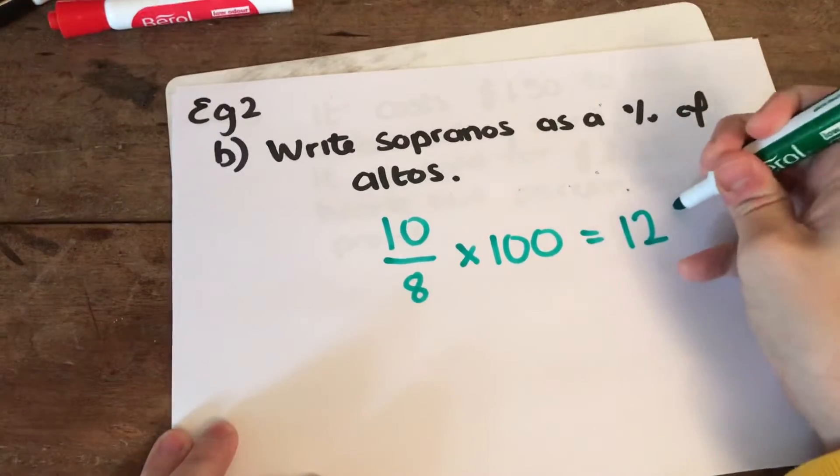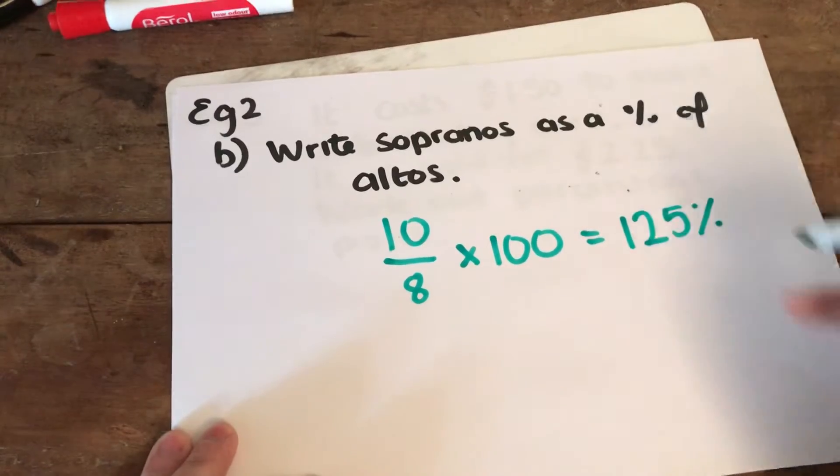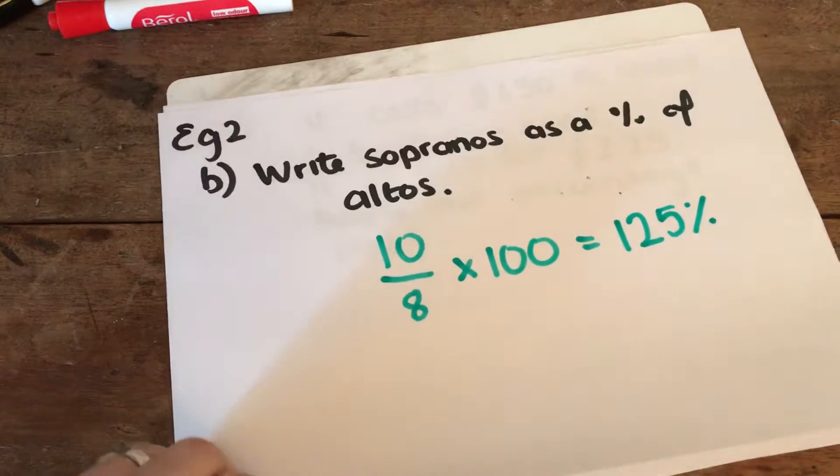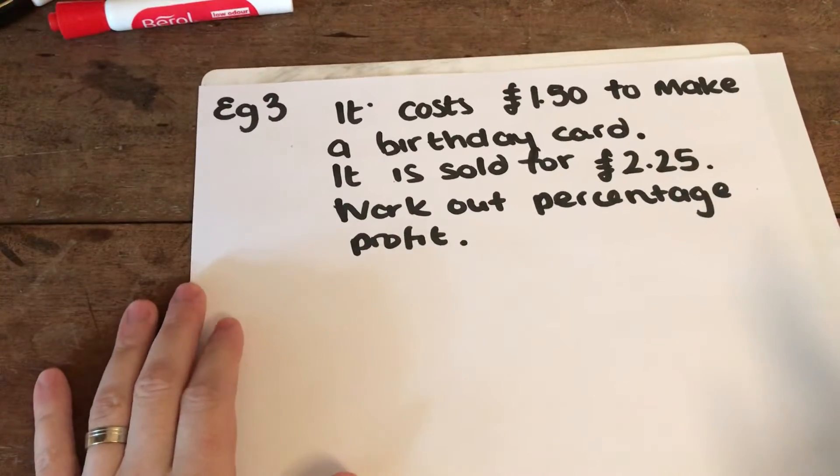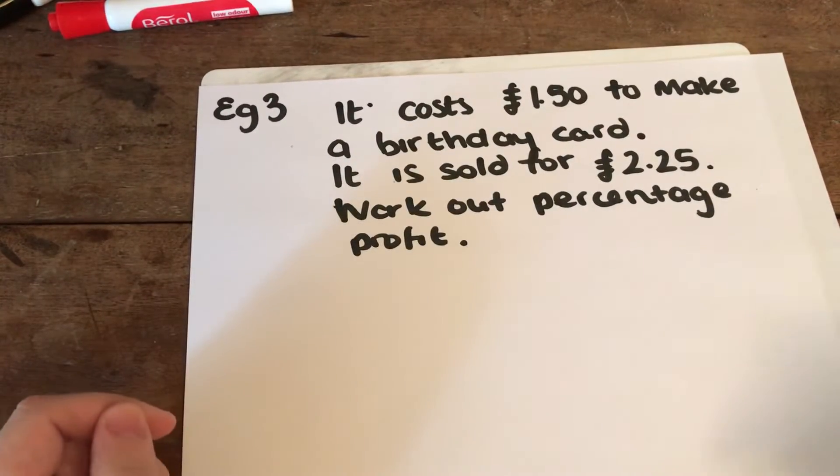For the next part, the final example, it says it costs £1.50 to make a birthday card. It's sold for £2.25. Work out the percentage profit.